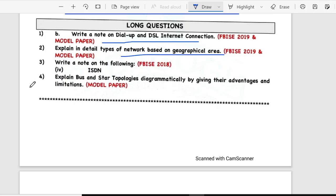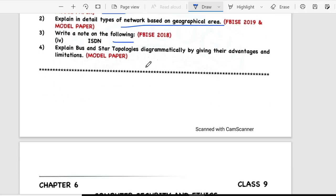Third is write a note on ISDN. Fourth explains star and bus topology diagrammatically by giving their advantage and limitations.